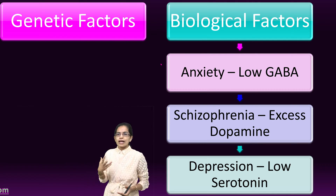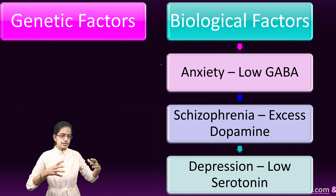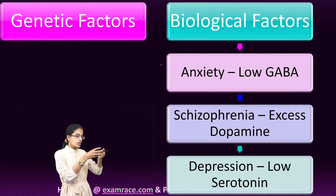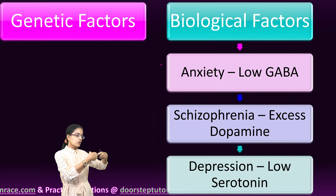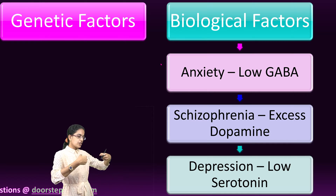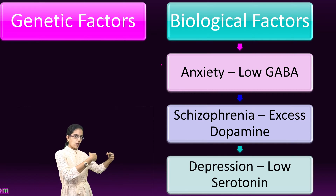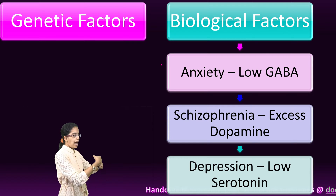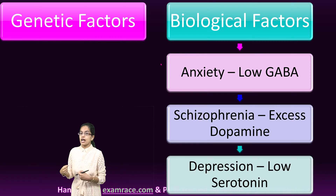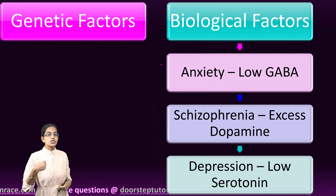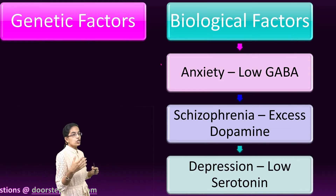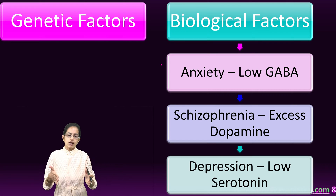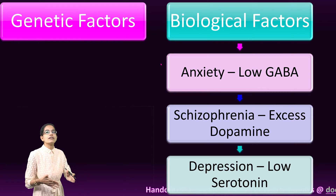According to the biological factor theory, when messages are transmitted in the neurons, there is a synapse — a tiny space that separates one neuron from the next. The nerve endings stimulate one neuron to the next through neurotransmitters. If the neurotransmitters leading to a specific signal are disturbed, biological factors come into play. For example, in patients with higher levels of anxiety, lower levels of GABA are seen. In patients with schizophrenia, higher levels of dopamine are seen. In patients suffering from depression, lower levels of serotonin are seen.